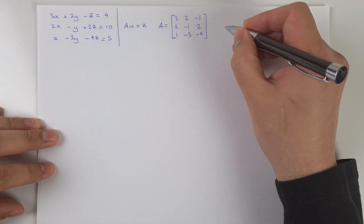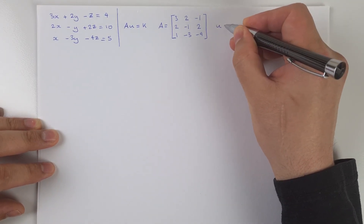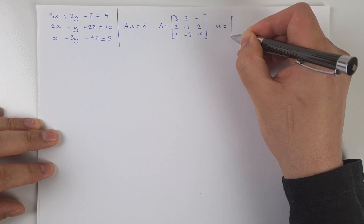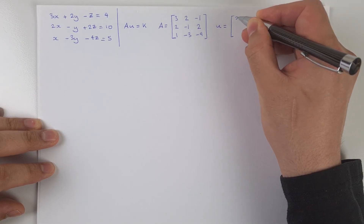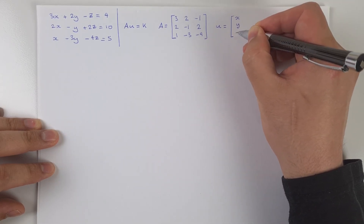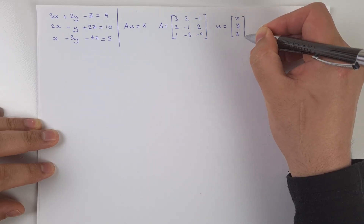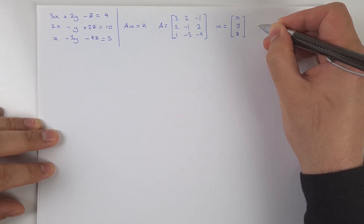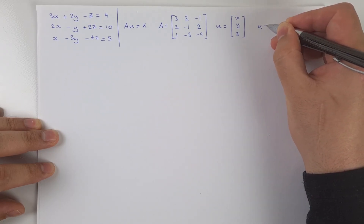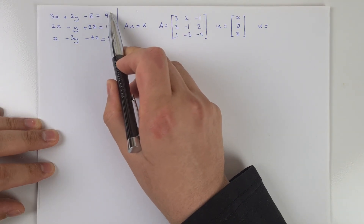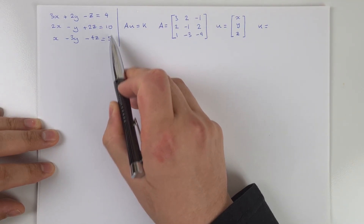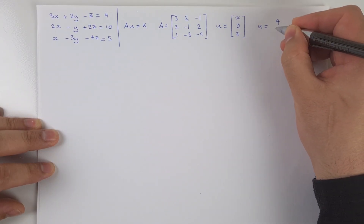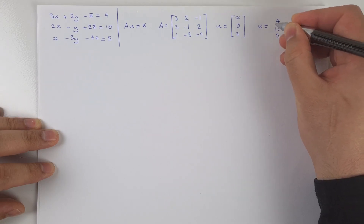Now we need the vector of unknowns. That's pretty easy because we have three unknowns — x, y, and z — so we just stick them into a vector. And lastly, we have a vector of constants, which is going to be the right-hand sides of our equations in vector form: 4, 10, and 5.